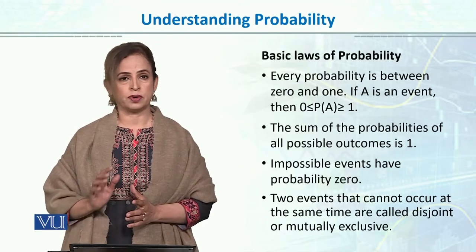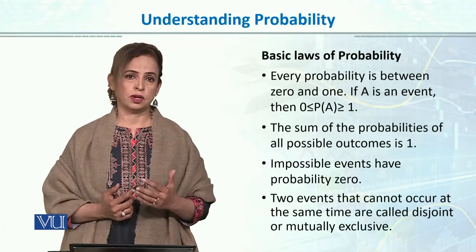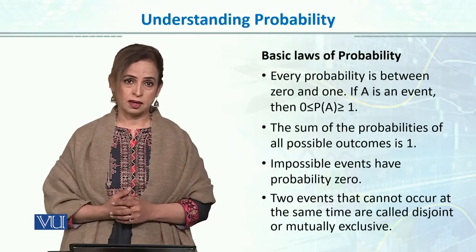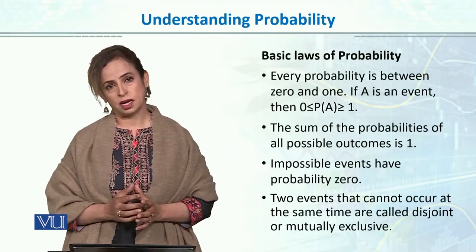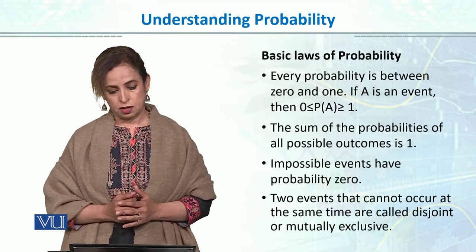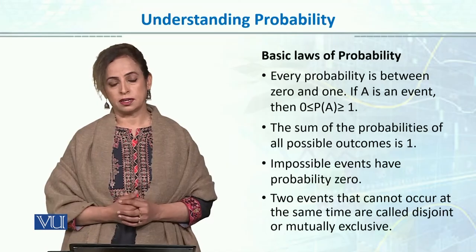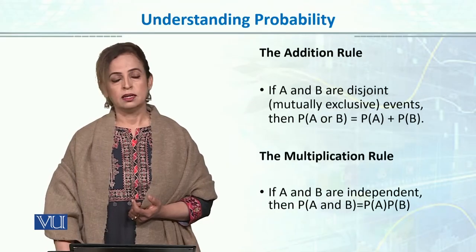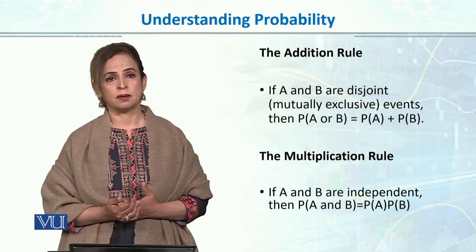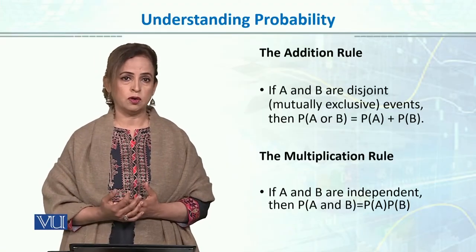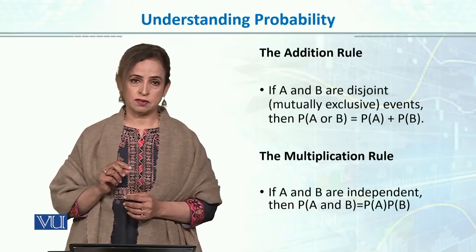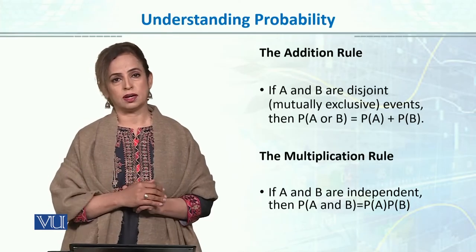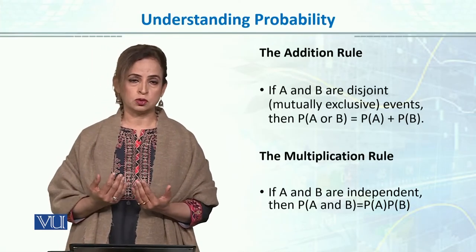Probability is the likelihood of occurrence of any event. Its value lies between 0 and 1, where 0 means the event will definitely not occur, and 1 means the event will definitely occur. Two events that cannot occur at the same time are called disjoint or mutually exclusive events. When we have two mutually exclusive events and we want event A or event B, we use the addition law and simply add their probabilities.